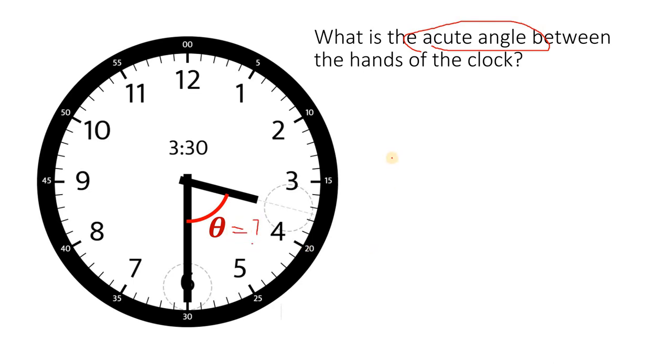There's a formula to answer this kind of question. And here's the formula to be used. The angle between the hands of the clock must be equal to the absolute value of 30h minus 11m over 2.